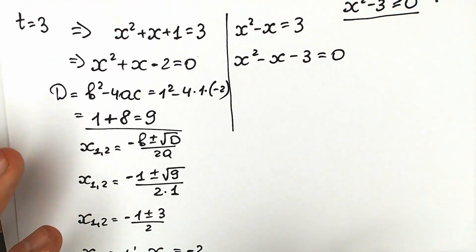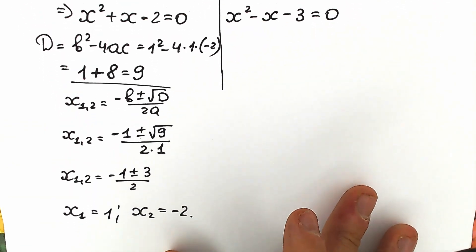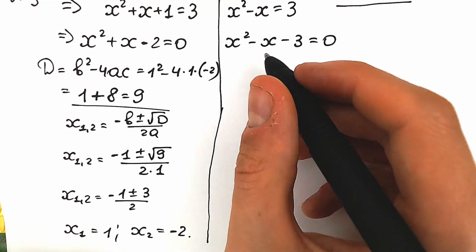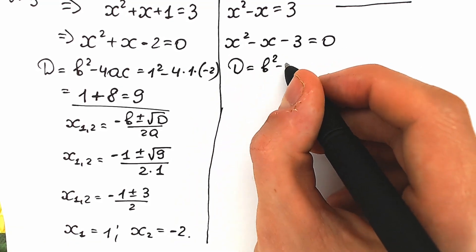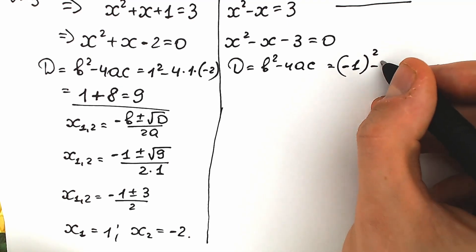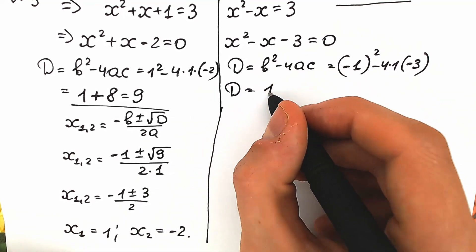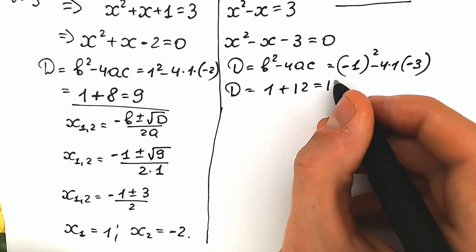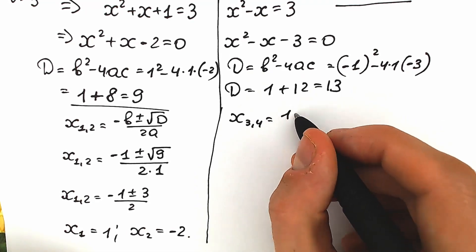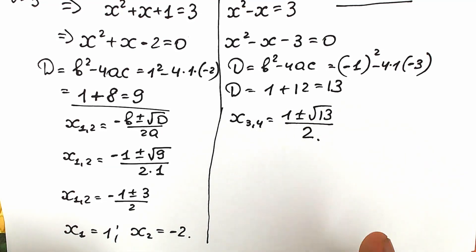Because of the square root in the original equation, don't forget about those two inequalities from the beginning. Let's first find the other pair of roots from the second equation. The discriminant equals (minus 1) squared minus 4 times 1 times (minus 3) equals 1 plus 12 equals 13. So x₃ and x₄ equal (1 ± √13) over 2. We now have four roots total.